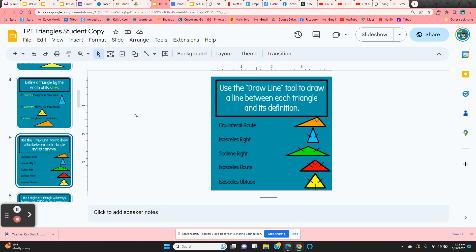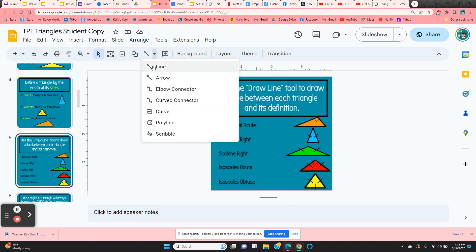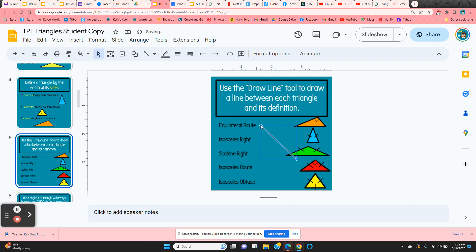Now on slide five, they're going to use the draw line tool to connect a type of triangle to its visual. They come up here to the draw line tool, select a line, and they're going to get a little plus sign. They just click where they want it to start. When they click on this little blue circle at the end, you click and hold, then they can move that line where they want.